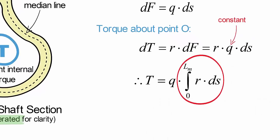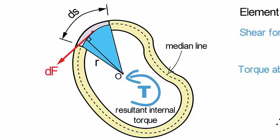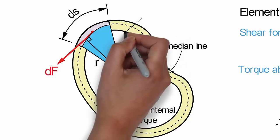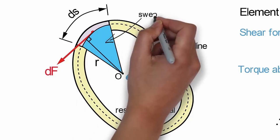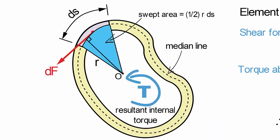What does this integral represent physically? Well, r times ds defines a rectangular area. If we look at our section closely, we see that r sweeps out a triangular area along ds. This triangular area is precisely one-half the rectangular area r times ds.